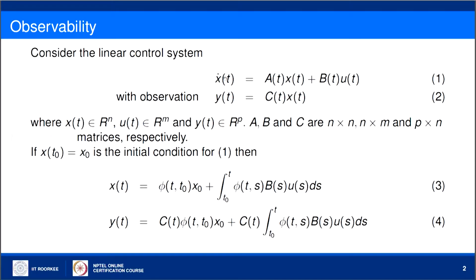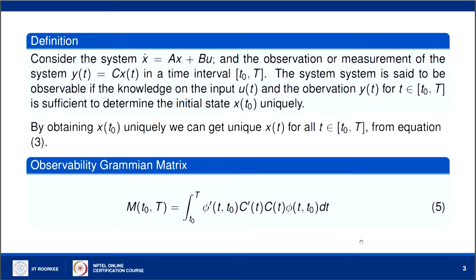Now if x(t0) = x0 is the initial condition of the system, then the solution of the first equation is written as x(t) in terms of the state transition matrix φ(t,t0), as given in equation 3. Then the observation y(t) is given by this expression. We assume that equation 4 — y(t) — is available to us; from it, is it possible to get x(t)? That is the question of observability.